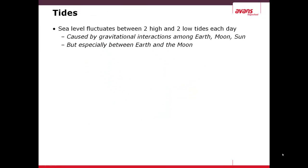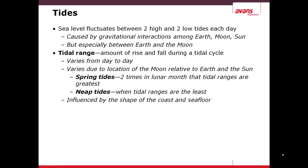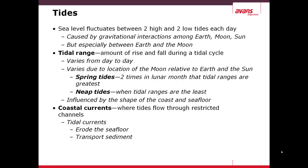Tides are sea level fluctuations between two high and two low tides each day, which are caused by gravitational interactions among the Earth, Moon, and Sun, but more specifically between the Earth and the Moon, which has more of an influence than the Sun. The tidal range is the amount of rise and fall during a tidal cycle, and this varies from day to day. Two times in a lunar month the tidal ranges are the greatest — this is called a spring tide. Neap tides are when it's at the lowest. Tidal currents will erode the seafloor and transport sediment.